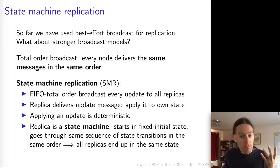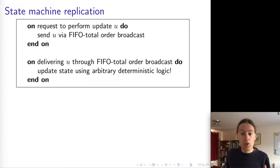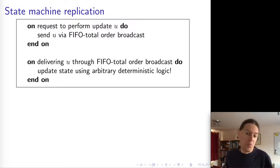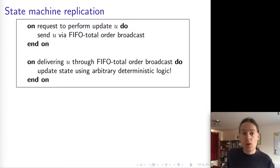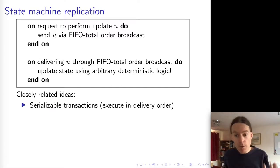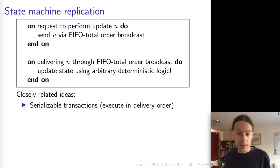This is exactly what we want of state machine replication, and it's a very good way of performing replication. If we have Total Order Broadcast, then the replication algorithm itself is really simple: whenever we have an update, we broadcast it by Total Order Broadcast, and whenever we deliver an update, we update the state accordingly. This idea is actually very widely used in a whole range of different replicated systems.